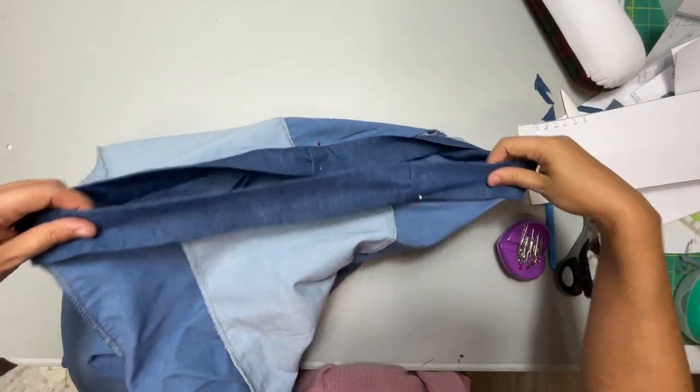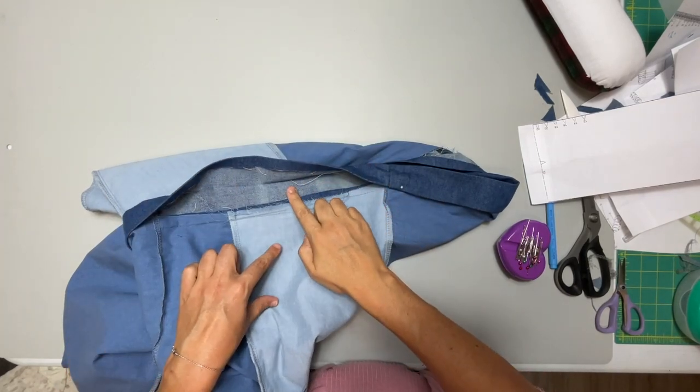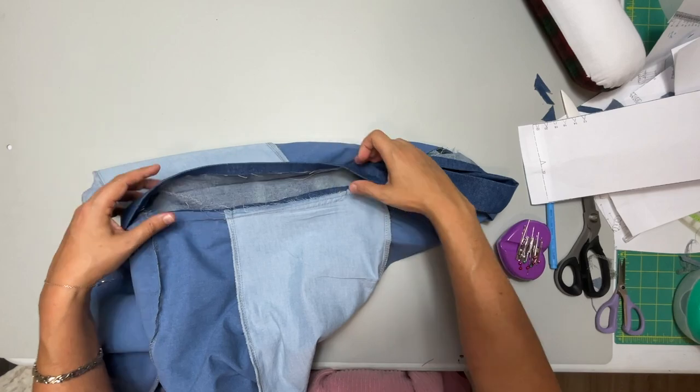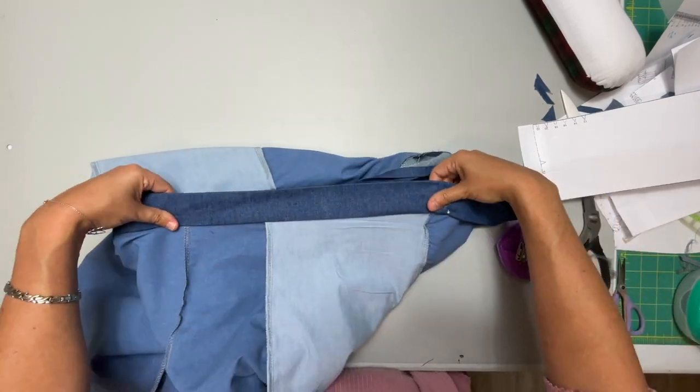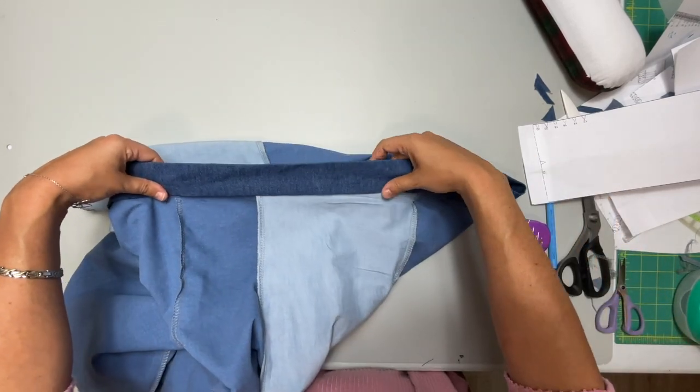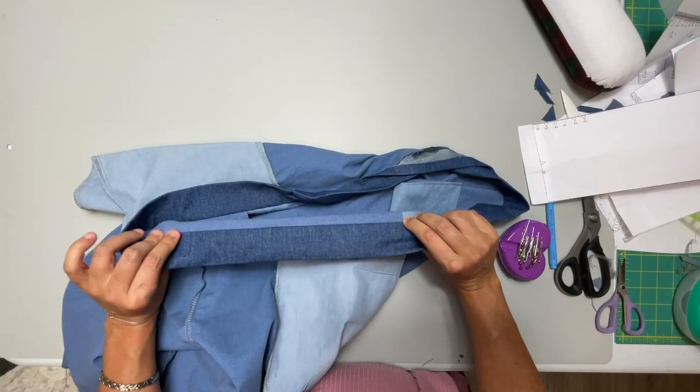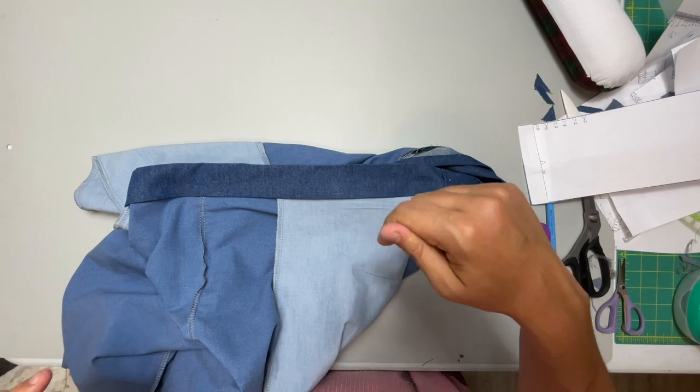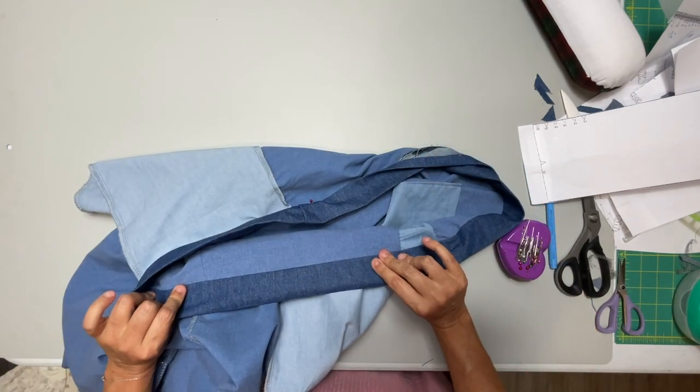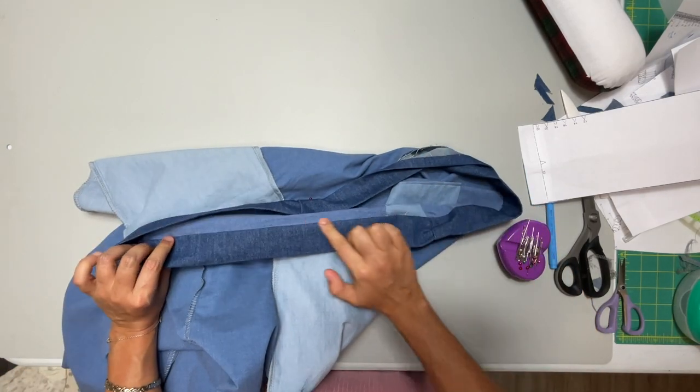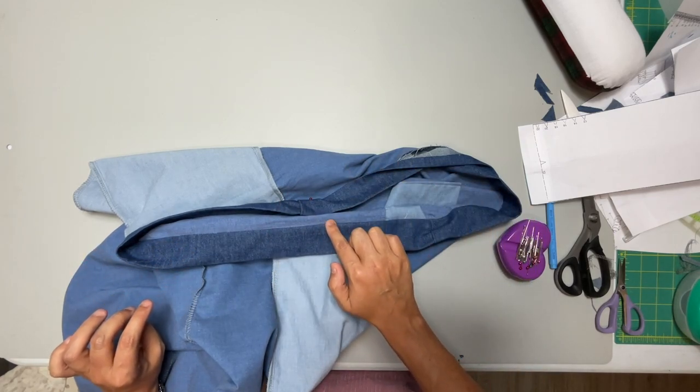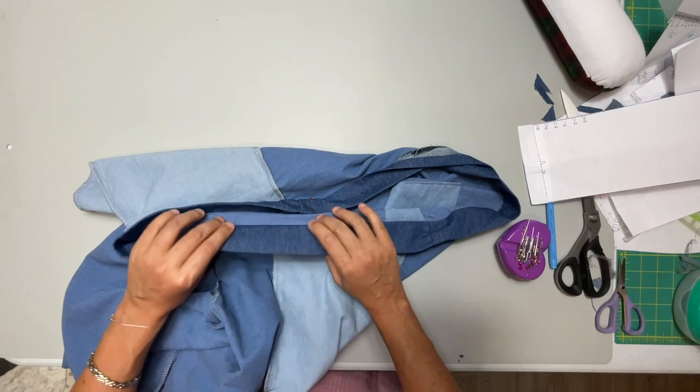So you're pressing your seam allowances up to the waistband and because you already have this pre-pressed and the center pre-pressed, all of it should kind of just fall into place and lay beautifully over the seam line of your waistband. So now you're going to go to the sewing machine and you are going to topstitch this all the way around the edge of the waistband closest to where it attaches to the pants to lock this in.